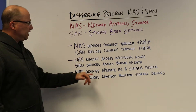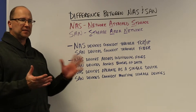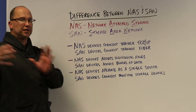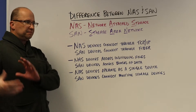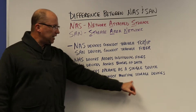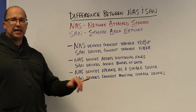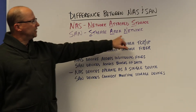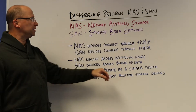Thirdly, NAS devices operate as a single device, almost like an external drive on a computer — it's a single entity. Whereas SAN devices actually connect storage devices together, so you could have a SAN connecting multiple NASs together. Essentially, it makes a network out of multiple single units.